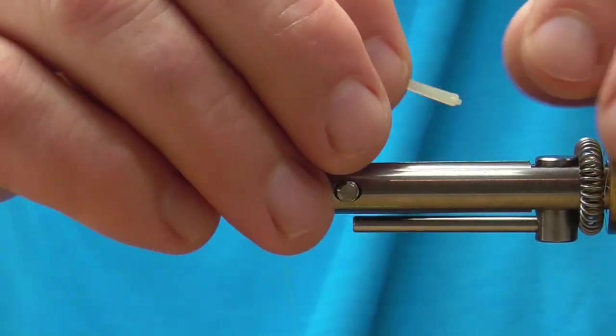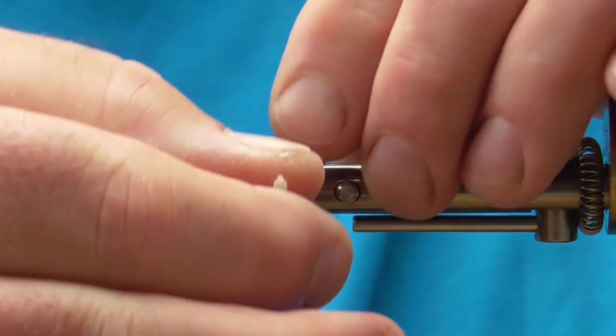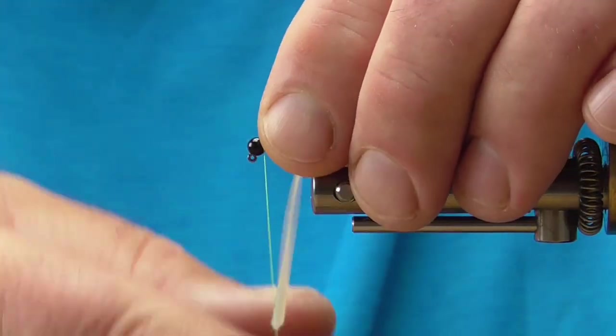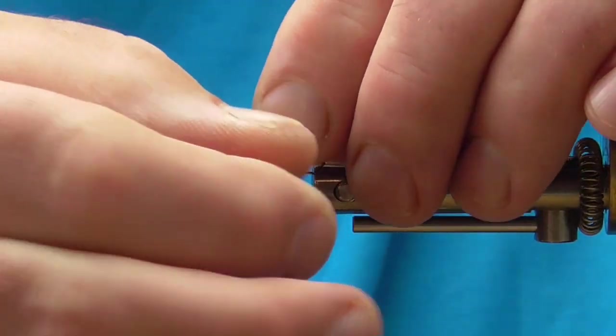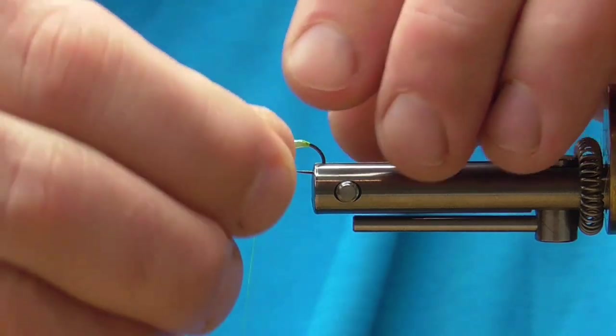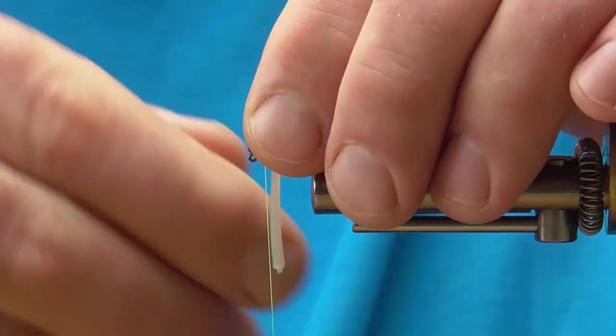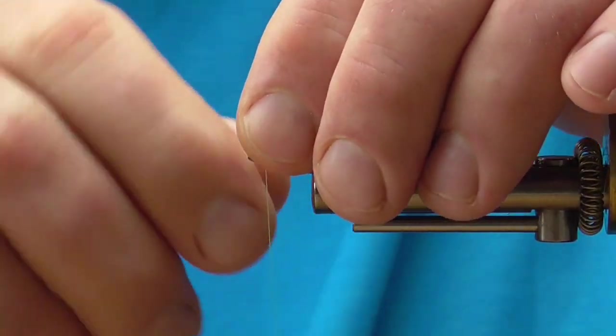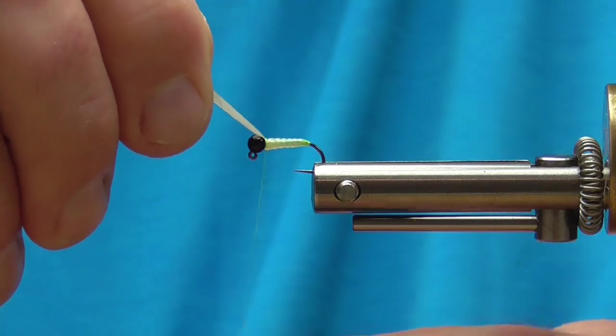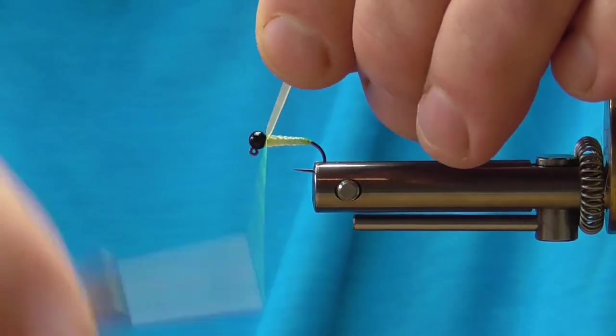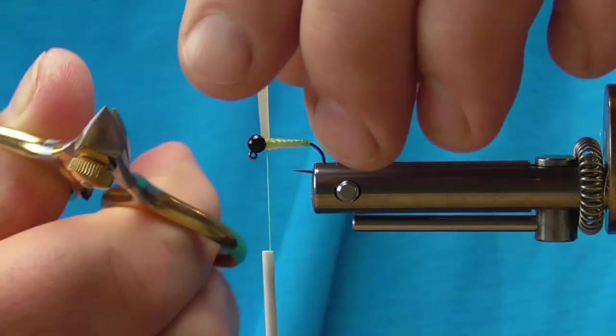Next we'll wrap the Hemingway's bug flesh. And you'll notice as we come up, I'll get both hands involved in this if I'm not going to use the rotary feature of my vise. And as we come up, you can see how that tapered look is occurring. It does provide a little bit of segmentation naturally, and also the pearl tinsel is showing through.